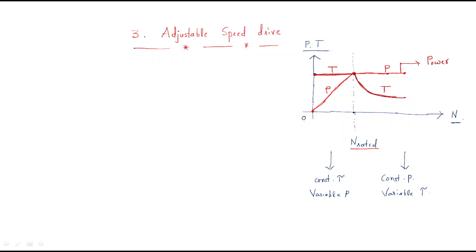In the first region, torque is constant and power is variable — that is the constant torque variable power region. In the second region, after rated speed, power is constant and torque is variable — that is the constant power variable torque region. These are the characteristics of the adjustable speed drive.